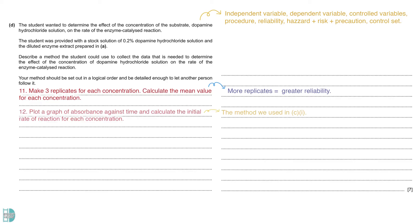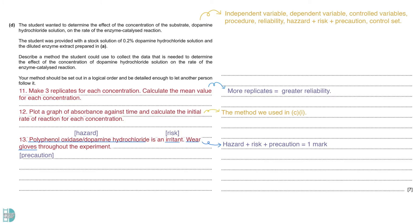To calculate the rate of reaction, we can plot a graph of absorbance against time. Then, use the method in C1 to calculate the initial rate of reaction for each concentration. When writing about safety precautions, you must identify the hazard, state the risk, and describe the precautions taken. Polyphenol oxidase and dopamine hydrochloride are irritants. The experimenter should wear gloves throughout the investigation. Lastly, prepare a control set. A control set is there to prove that the dependent variable is affected only by the independent variable and not any other factors in the experiment. In this case, you can use distilled water instead of enzymes to show that the reaction does not take place.